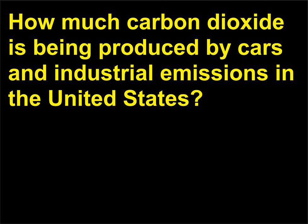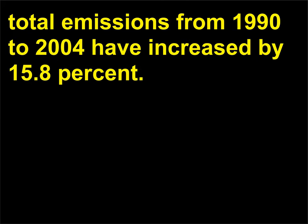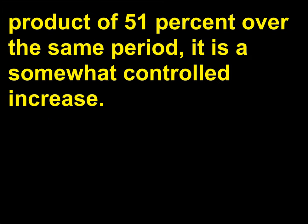How much carbon dioxide is being produced by cars and industrial emissions in the United States? A 2004 study from the Environmental Protection Agency noted that total emissions from 1990 to 2004 increased by 15.8%. While this is not great, when compared to an increase in the U.S. gross domestic product of 51% over the same period, it is a somewhat controlled increase.